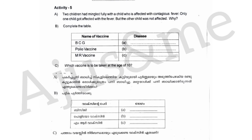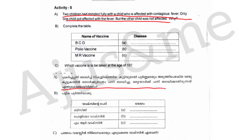Activity 5. Two children had mingled fully with a child affected with contagious fever. Only one child got affected with the fever, but the other child was not affected. Why?